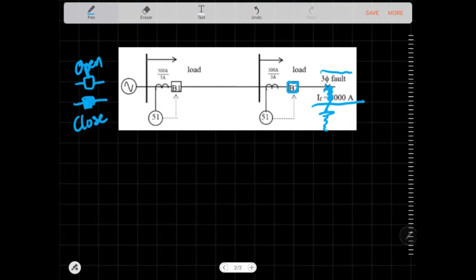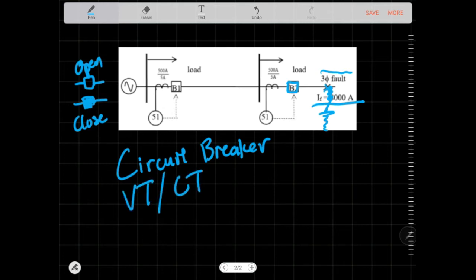So, all in all, there are like, I would say, three different components. The circuit breaker, a voltage transformer or a current transformer, and also relays. What do they play? This is a 51. This is a relay. And this is a current transformer.